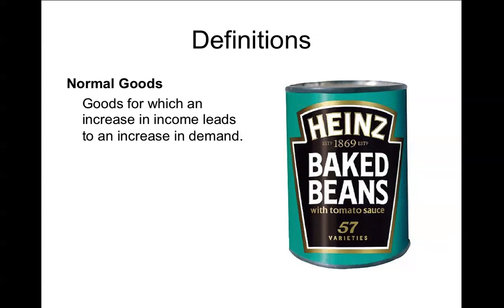Normal goods are goods for which an increase in income leads to an increase in demand. Most goods are normal goods, and a good example would be Heinz baked beans. If you want to eat baked beans, Heinz is generally considered to be the best and the most expensive, and it's the sort of thing that if you have more income you'll buy more of, compared to other brands.